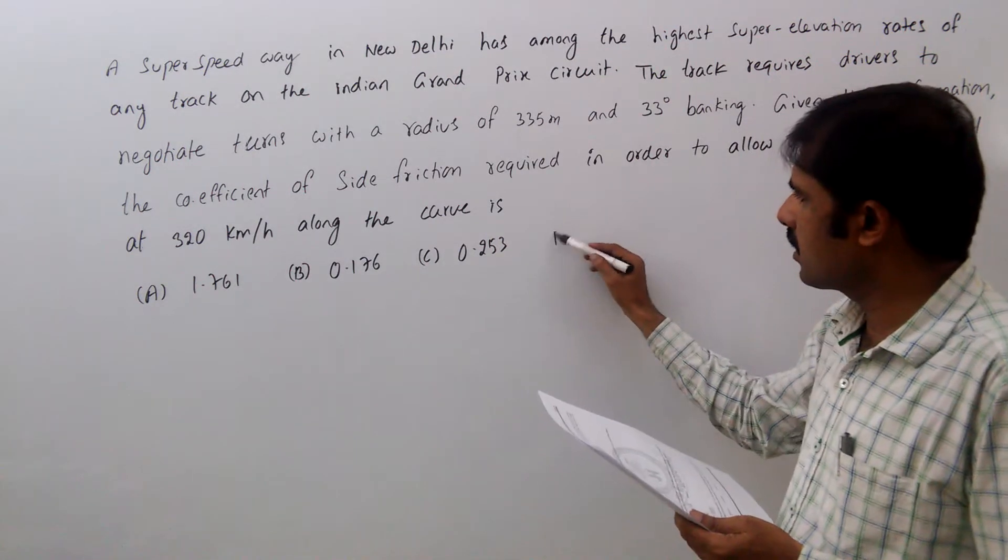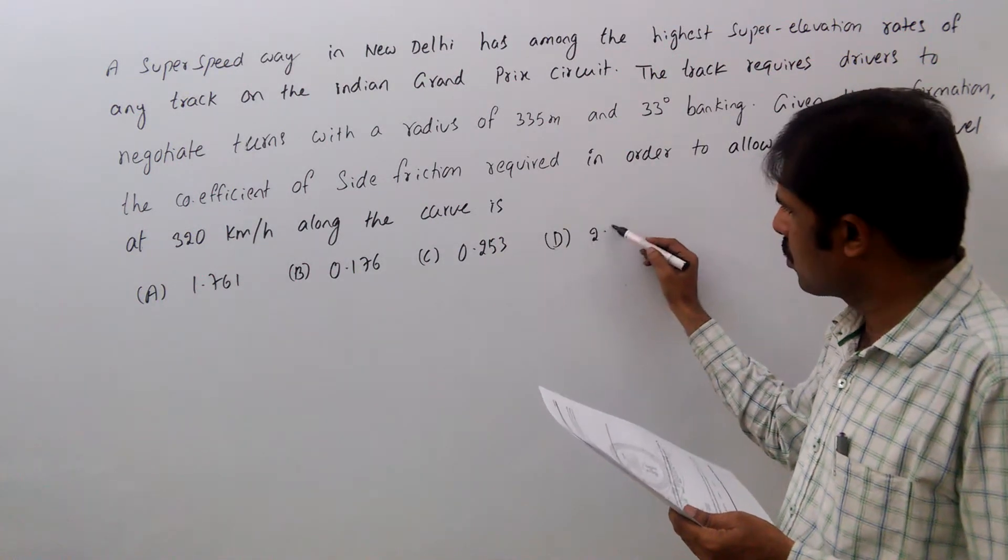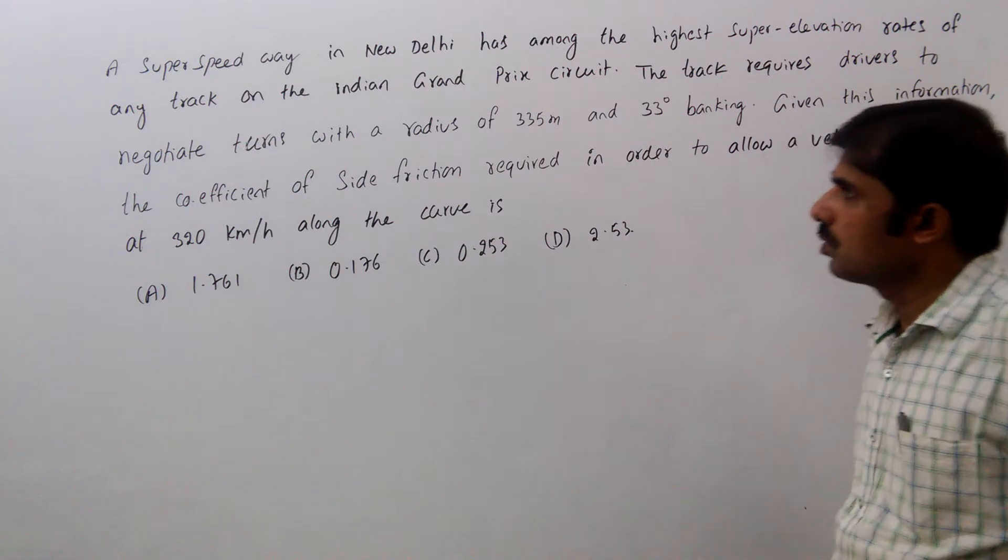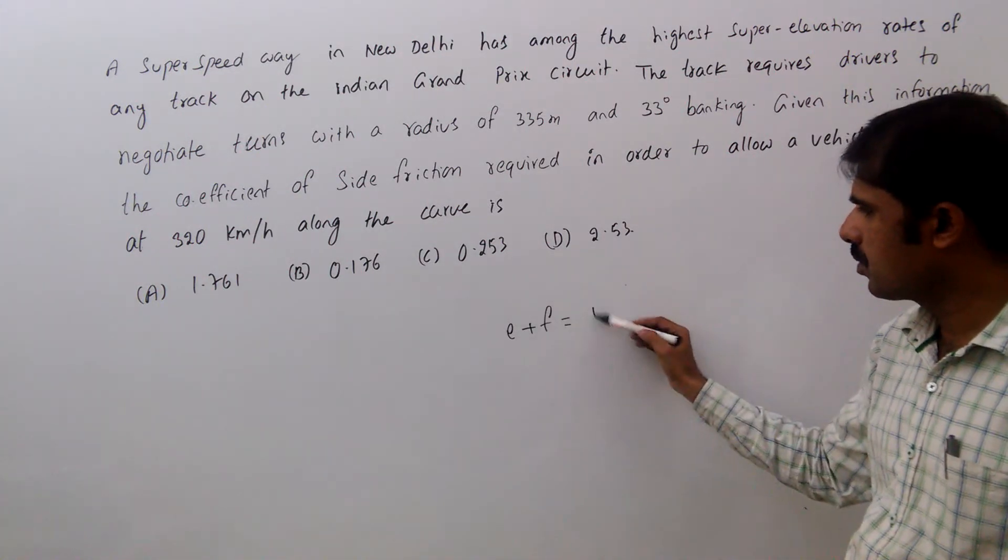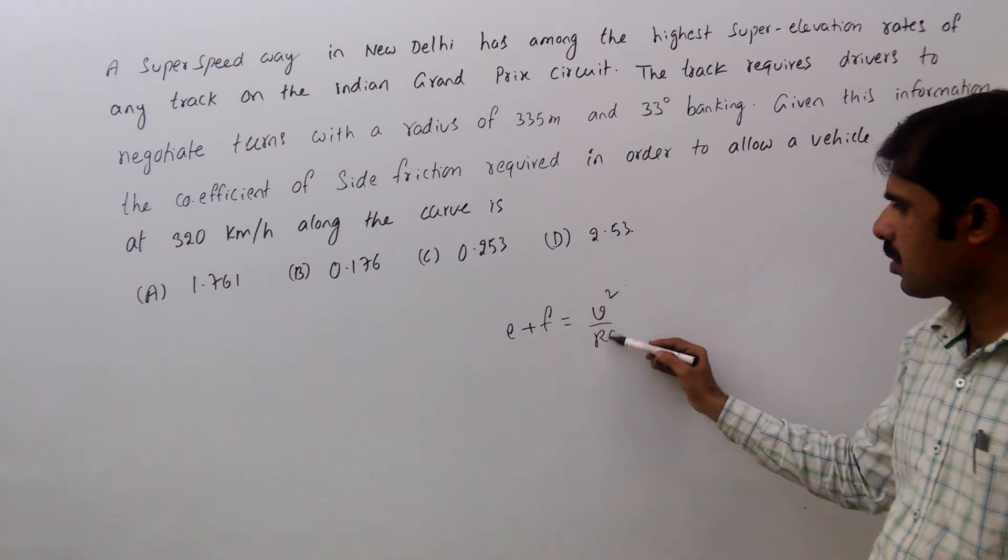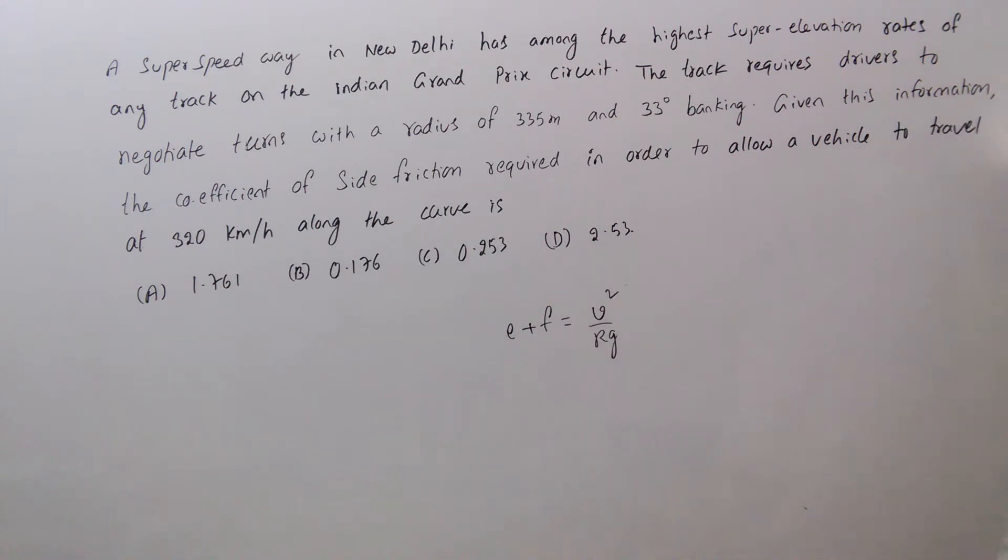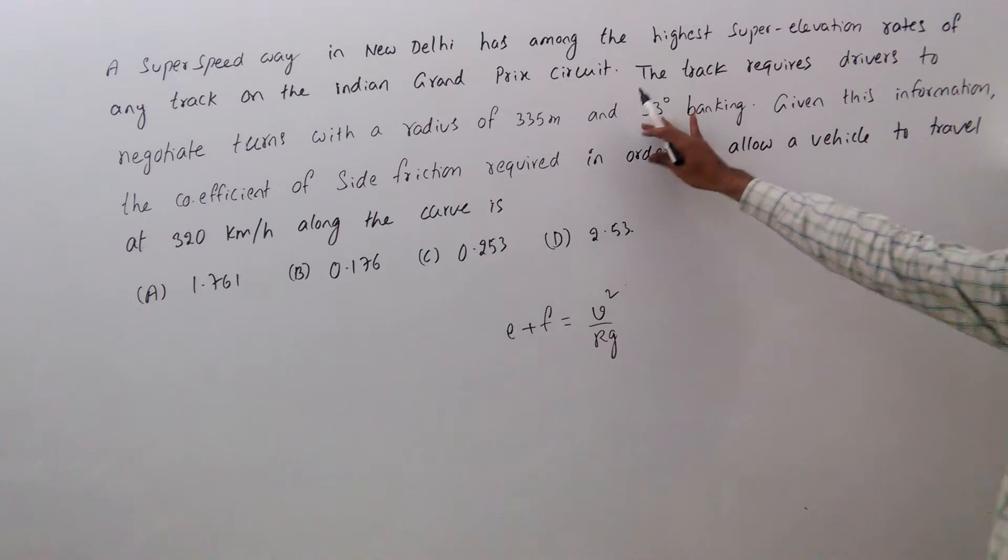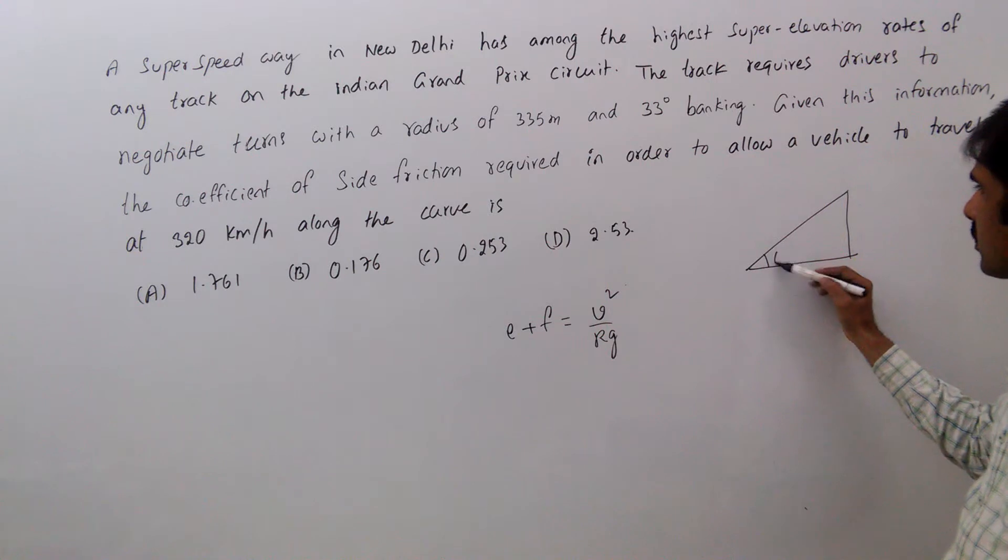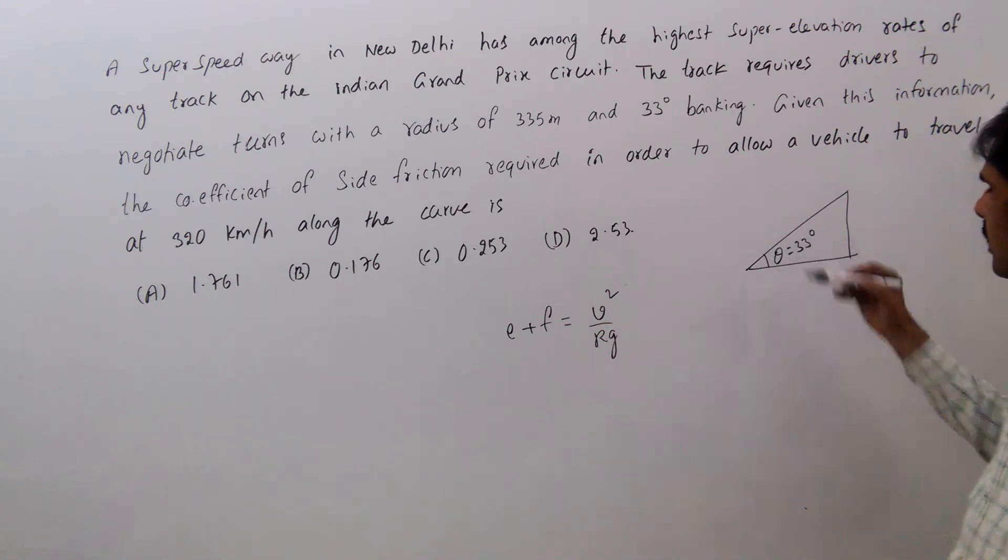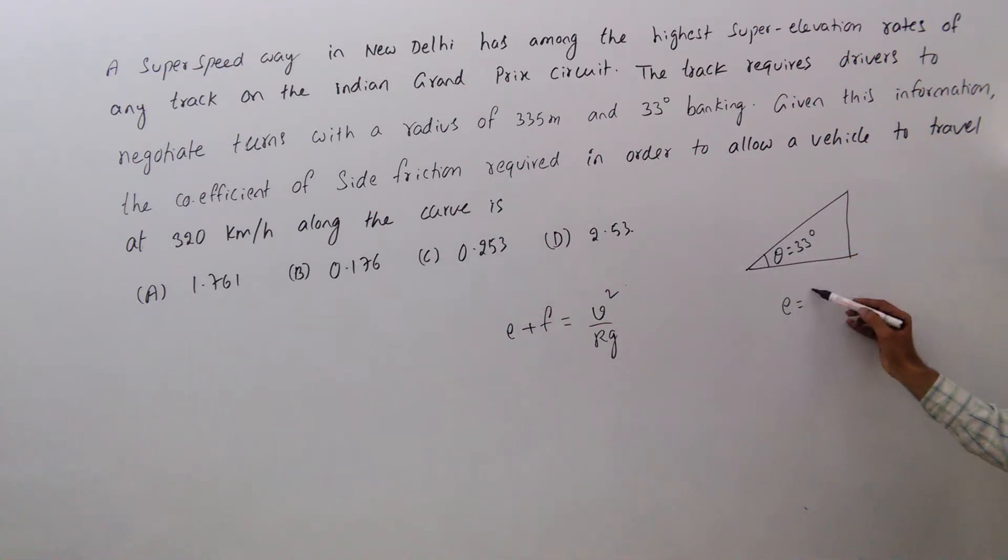We know the formula E plus F equals V squared by Rg. Banking angle theta equals 33 degrees. We know E equals tan theta.